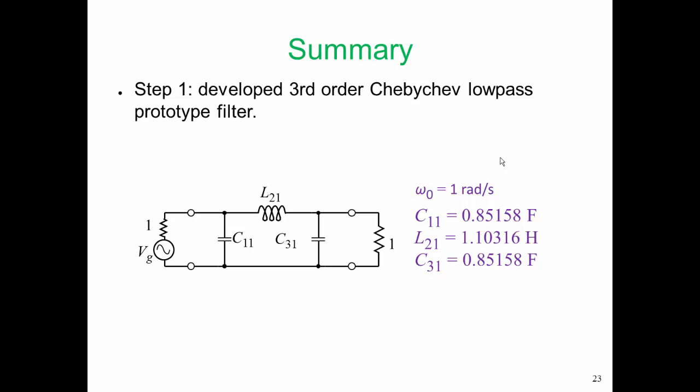So in summary, we've arrived at our third order Chebyshev lowpass prototype filter as shown there. We have the values for that. Now this filter is called a prototype filter, and throughout the development we will have prototype filters. We just happen to be refining them more and more as we go through. Everything is a prototype filter until we realize the final physical filter, and this is our lowpass prototype filter.